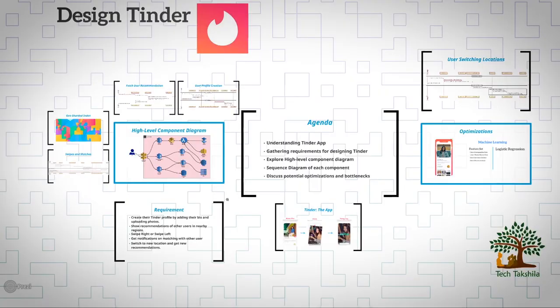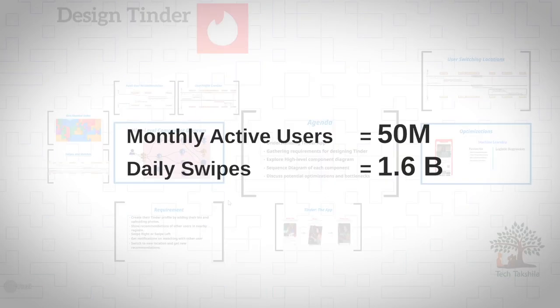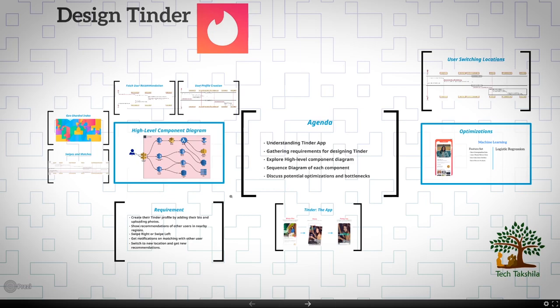Hello YouTube, today we have a system design video on Tinder. In this video you will discover how one can design a Tinder-like online dating platform during a system design interview. Tinder works at a massive scale — it is used in 190 countries and has over 50 million users around the world, which amounts to a total of 1.6 billion swipes each day.